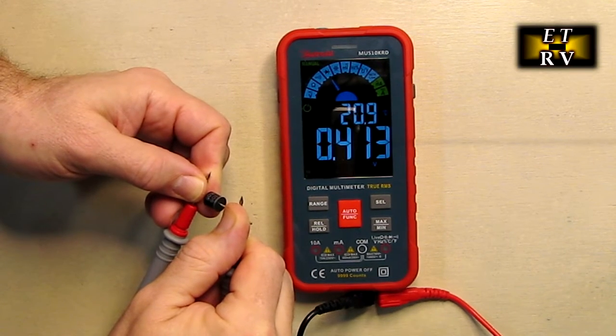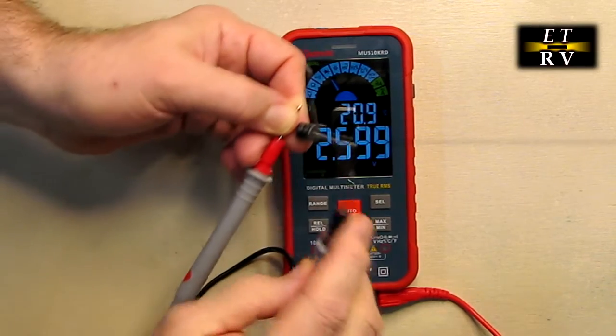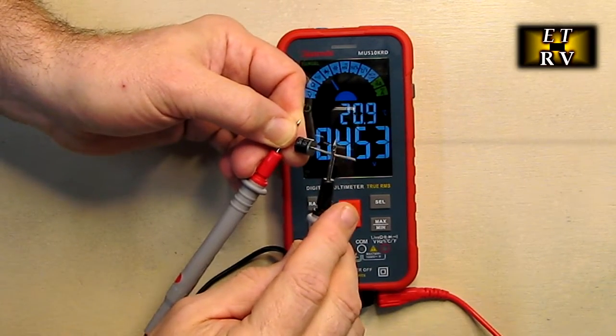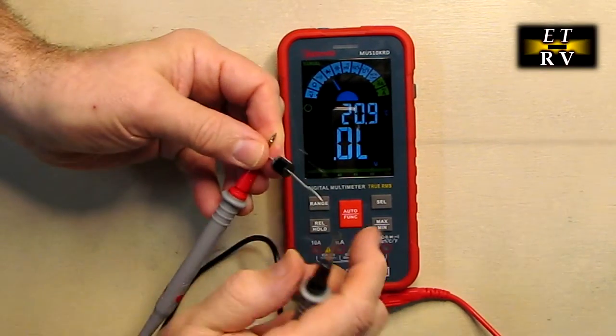And so right now I've got the negative on the negative and the positive on the positive, and it's conducting, showing me that it's a working diode. If I go the other direction,